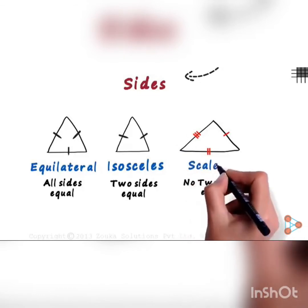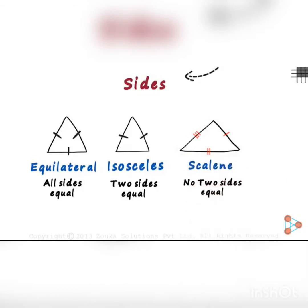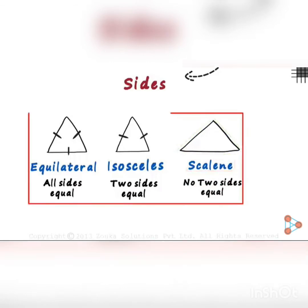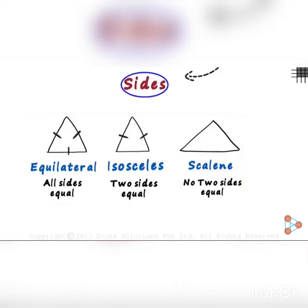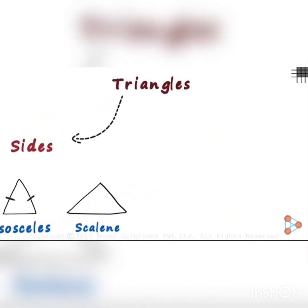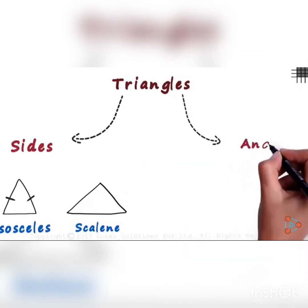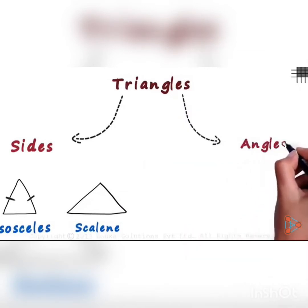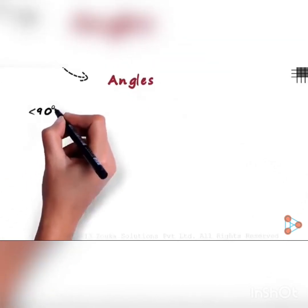And if a triangle has no sides equal, then such triangles are called scalene triangles — in scalene triangles no side is equal. That is all about triangles based upon sides. Now the second type of triangles is based upon angles.